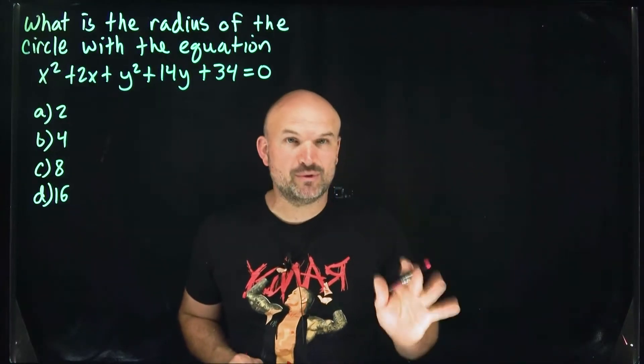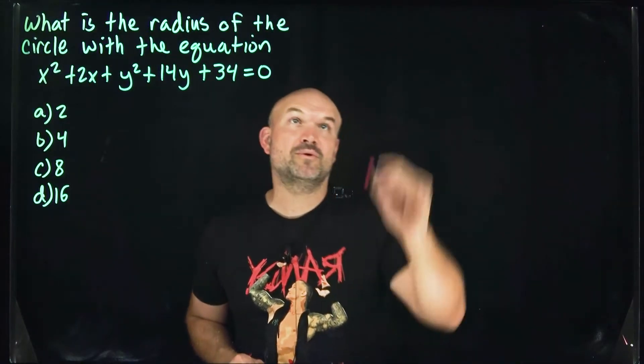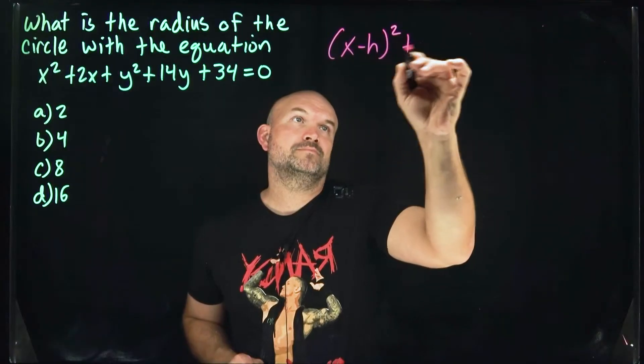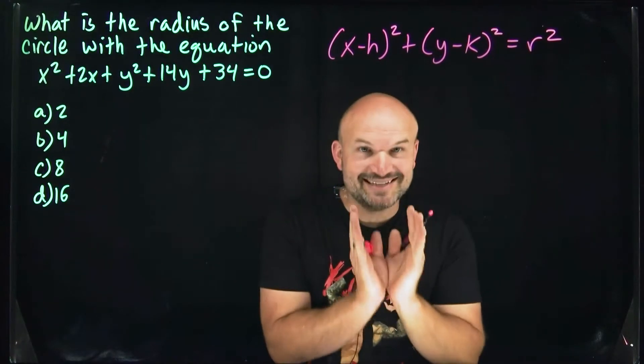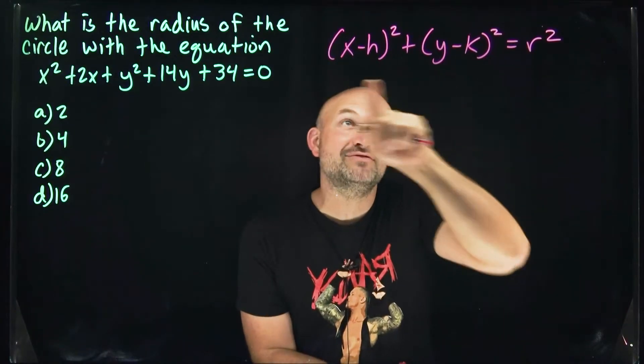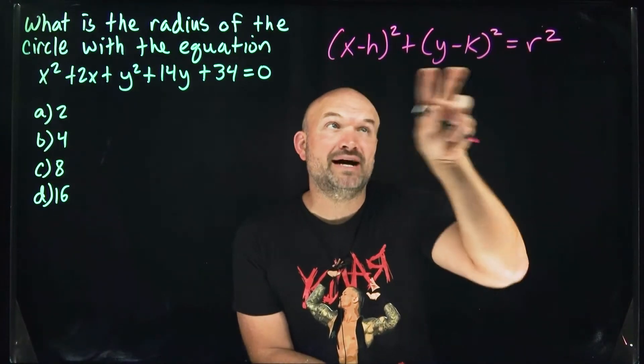The first thing you need to know is the equation of a circle in standard form. The important thing to pay attention to is that this standard form has binomial squares.